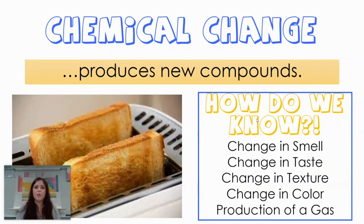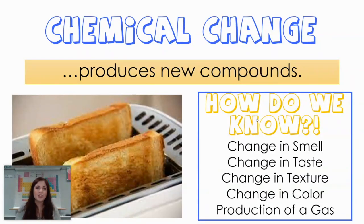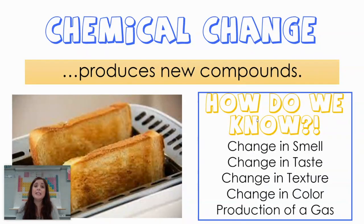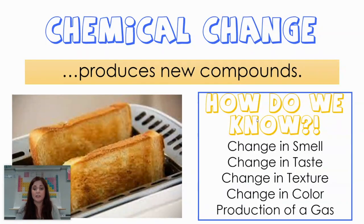So how do we know that a chemical change has occurred? We can have a change in smell, a change in taste — normally we don't taste things in a chemistry lab, but this is food chemistry, so if taste is changing, the chemical composition is also changing. Change in texture, change in color. And also if it produces a gas — if we're producing a gas that wasn't previously there, that indicates I've produced something new.